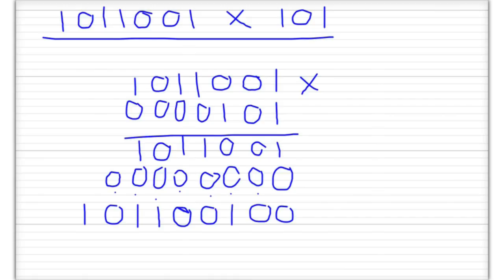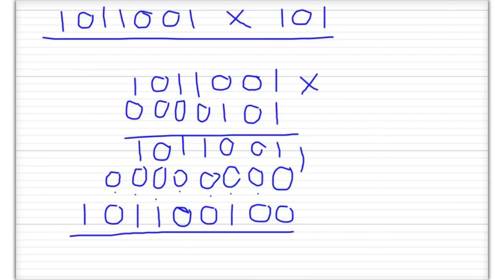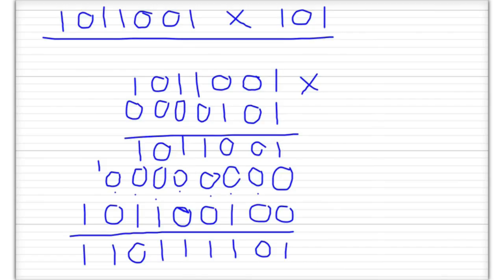Now what we need to do is add all of these numbers — this is where our binary addition comes in handy. We have: 1 plus 0 plus 0 is 1, 0 plus 0 plus 0 is 0, 0 plus 0 plus 1 is 1, 1 plus 0 plus 0 is 1, 1 plus 0 plus 0 is 1, 0 plus 0 plus 1 is 1, 1 plus 0 is 1, 1 plus 0 is 1, and 1 plus 0 plus 0 is 1, with a 1 left over. So the answer is 1, 1, 0, 1, 1, 1, 1, 0, 1.